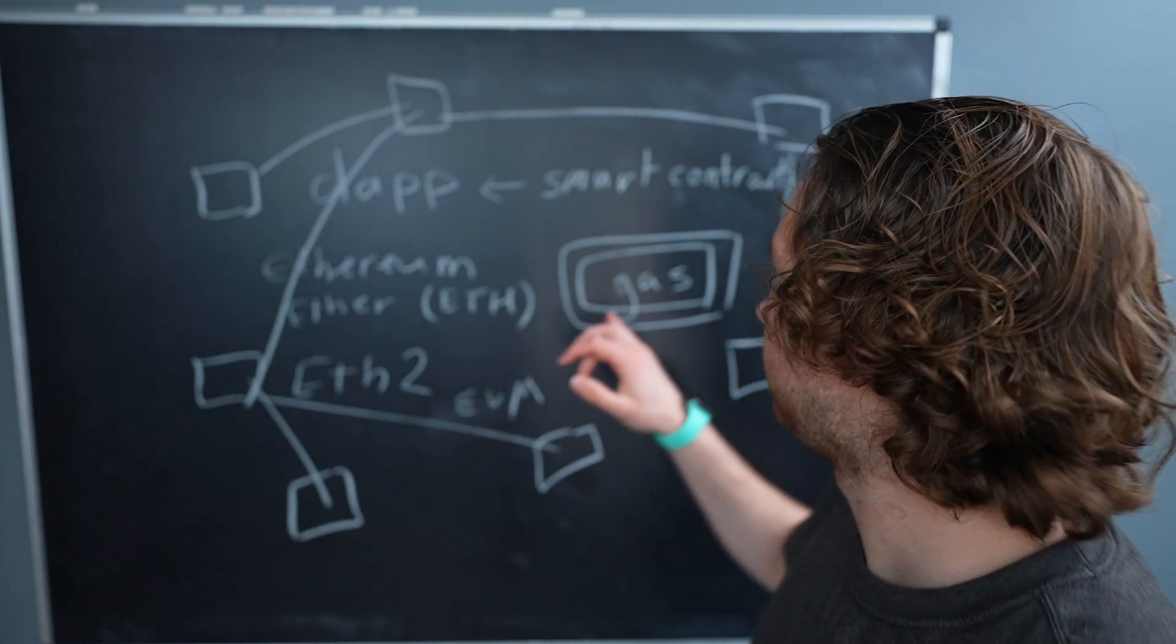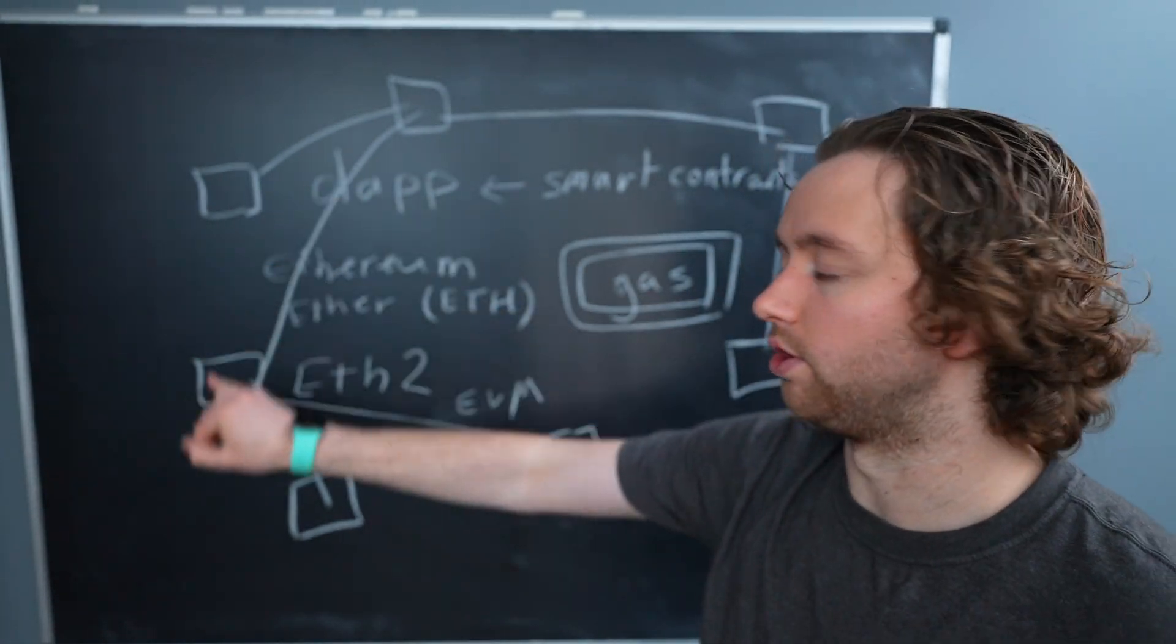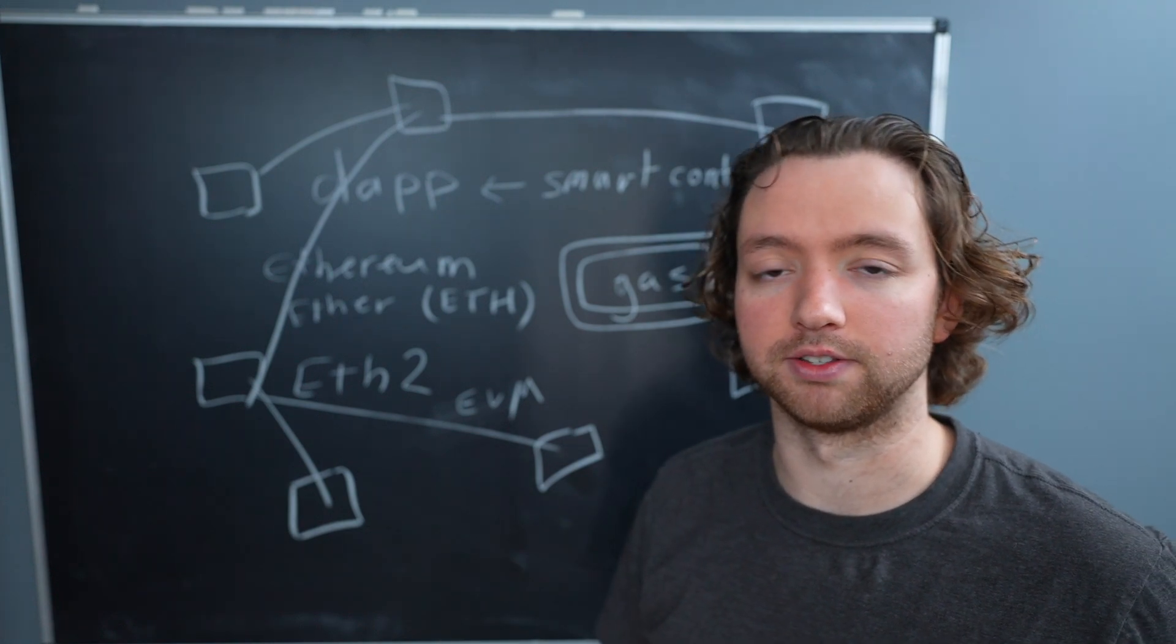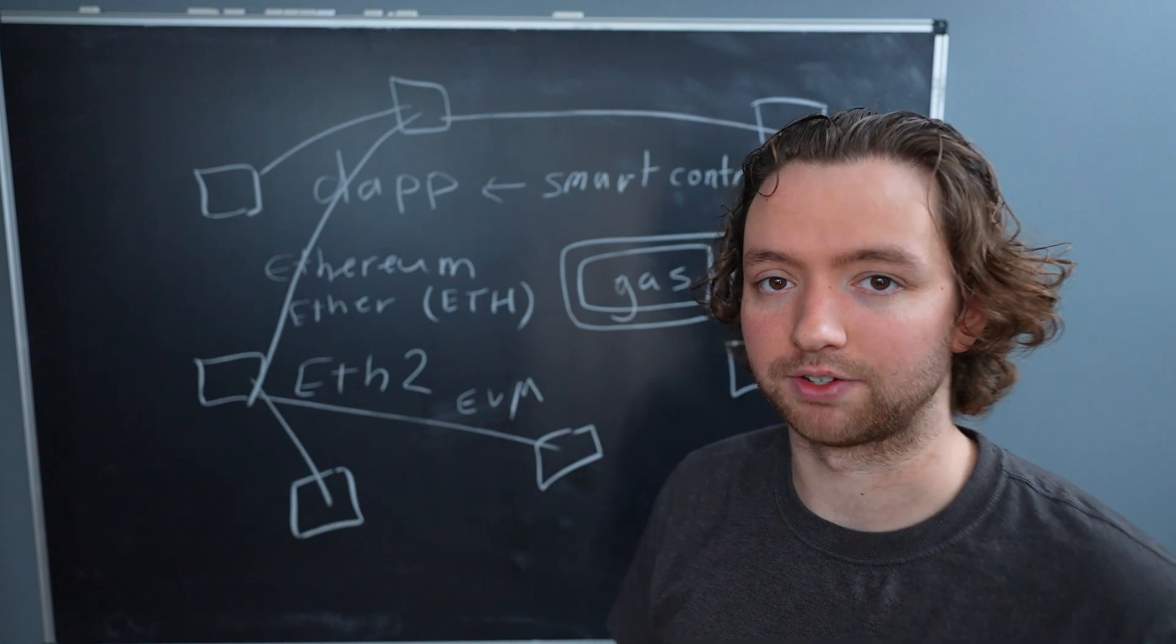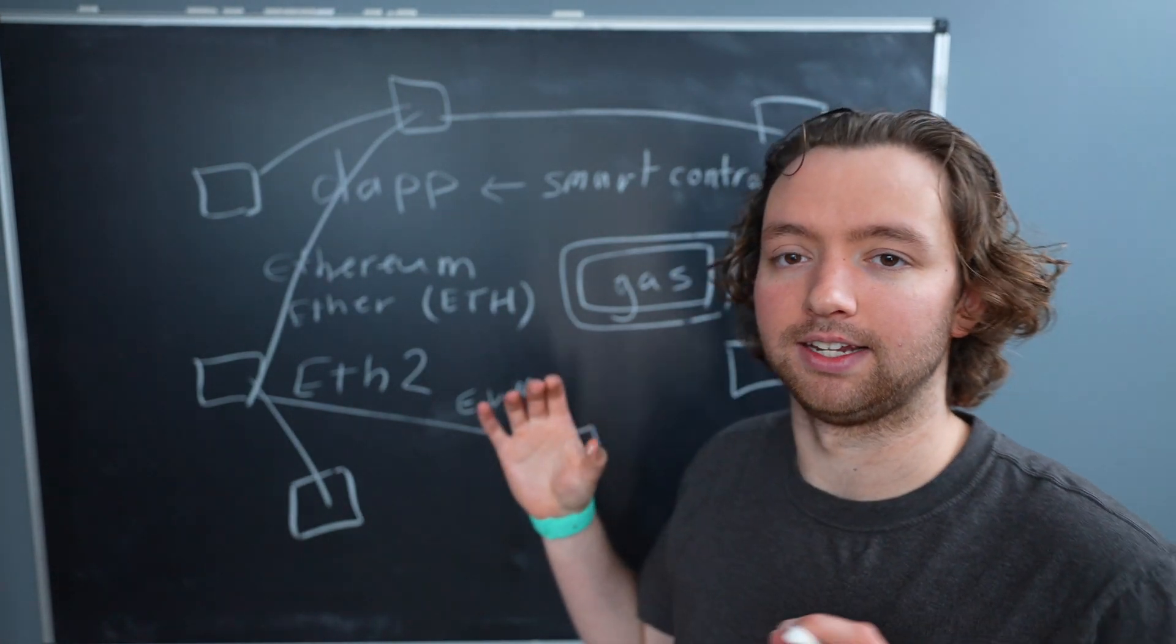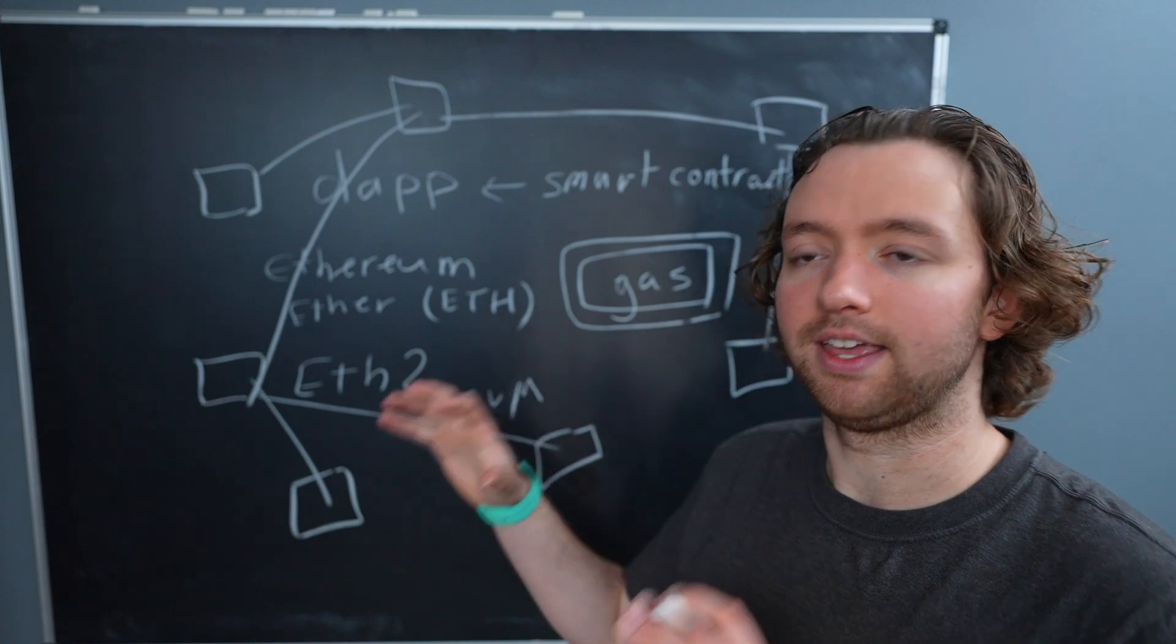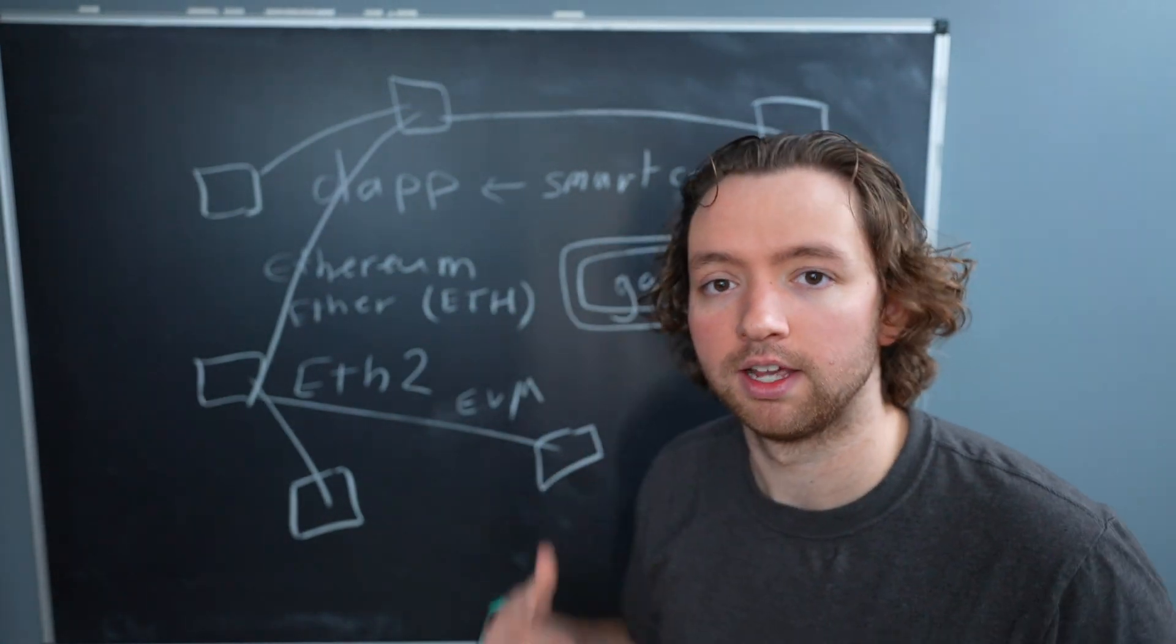And when a smart contract is executed, the gas goes to whatever node confirms those transactions. So it's similar to the fees in the Bitcoin transactions, but instead it's gas and it's tied to how much operation is done inside of the smart contract.